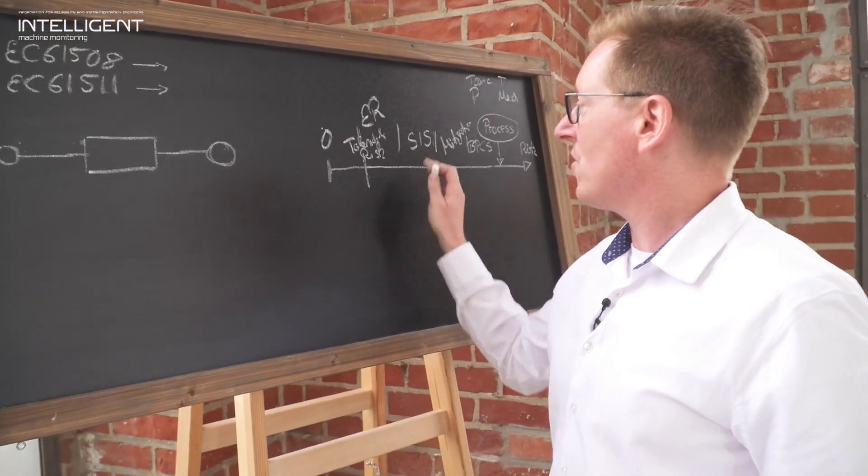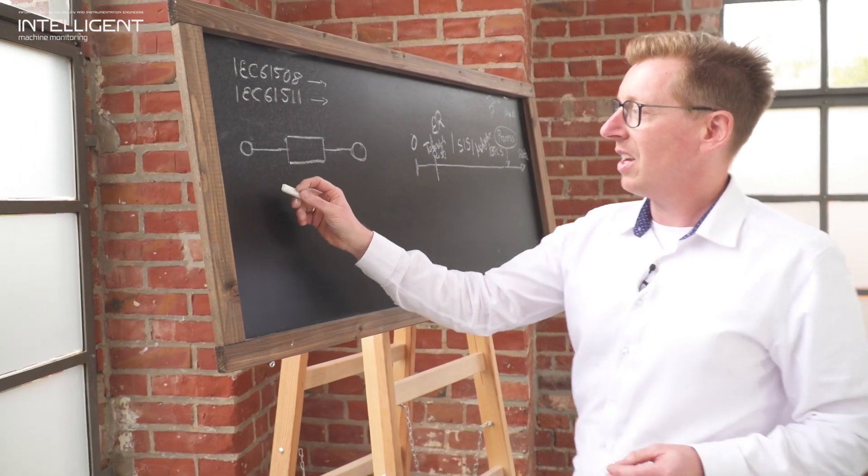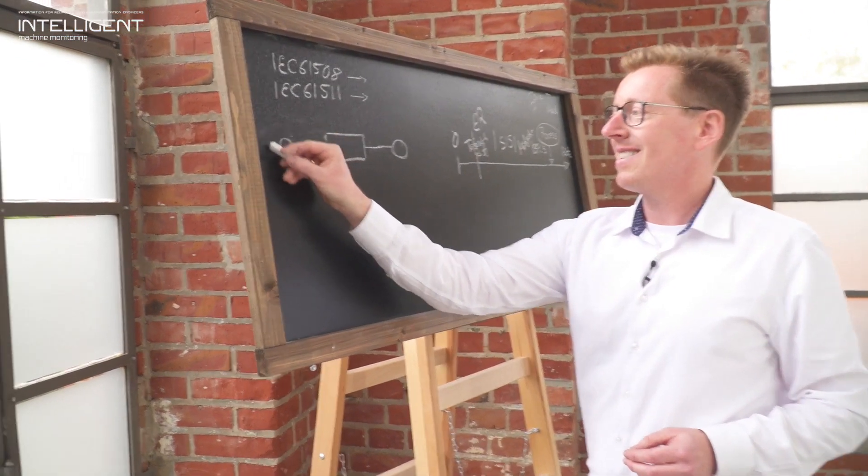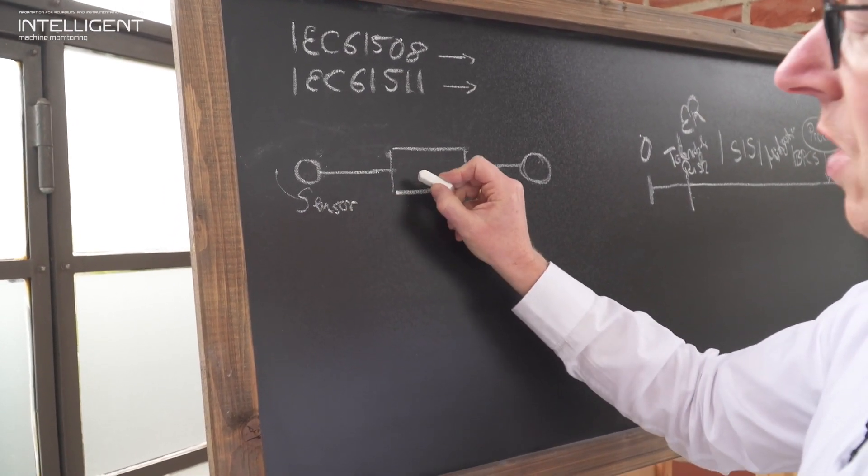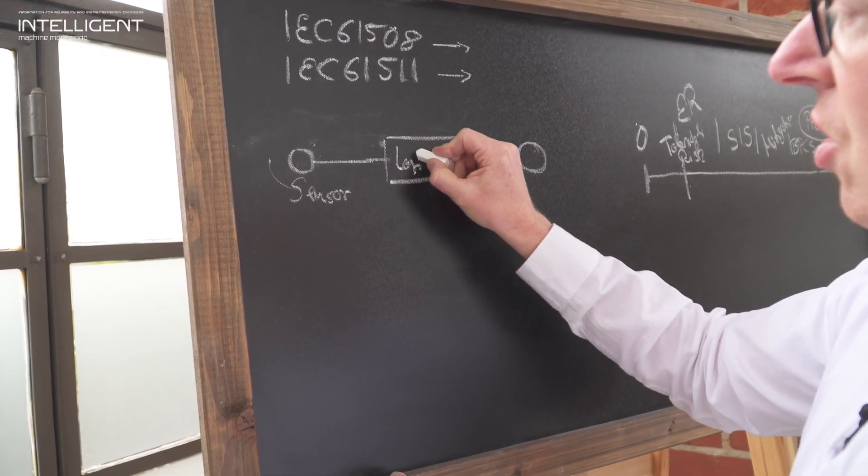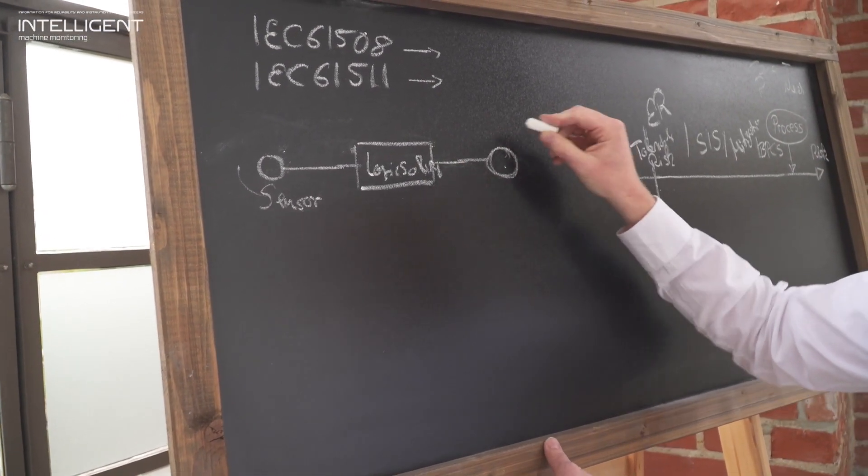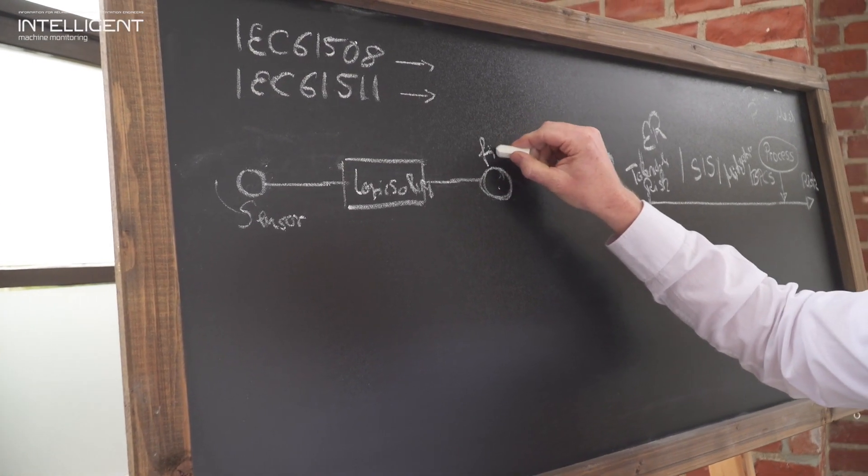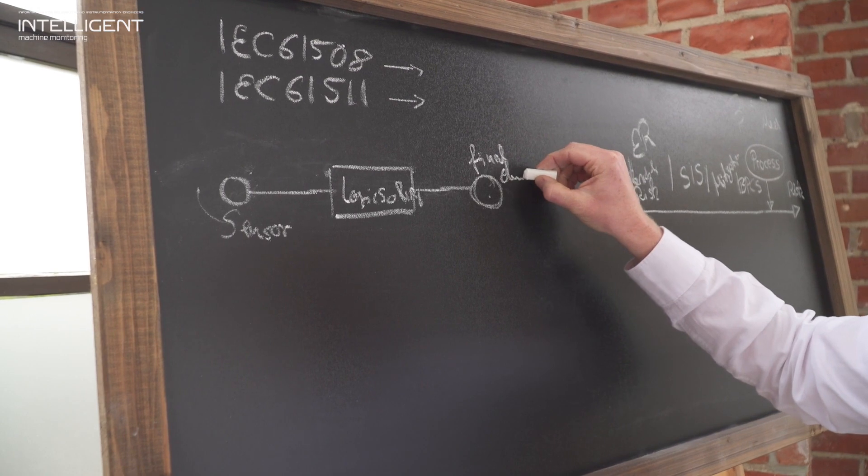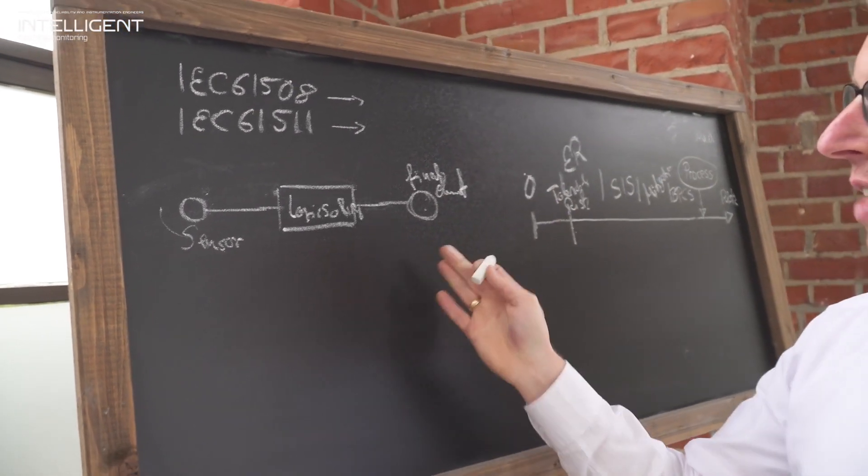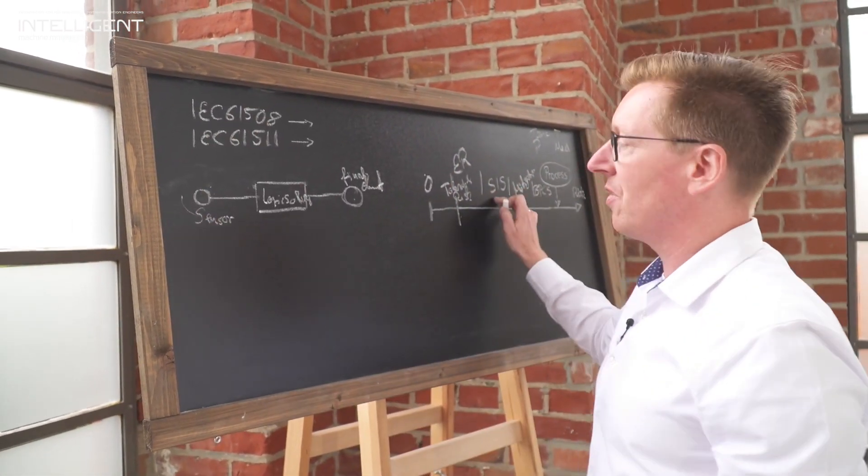In essence, every safety instrumented system consists of three components shown here. There is a sensor feeding a signal into a logic solver and there is a final element, a final actor. This could be your motor breaker, for example, on a rotating piece of equipment. And this in essence builds the core of a safety instrumented system.